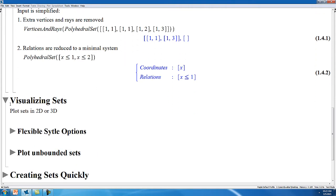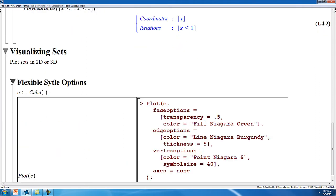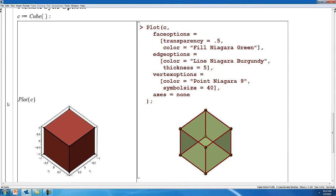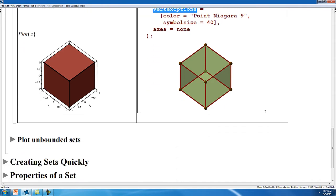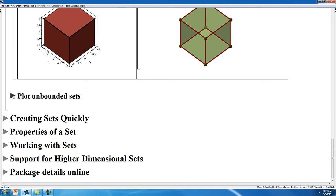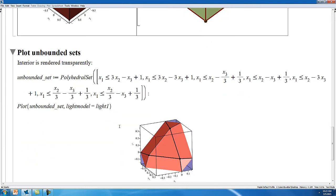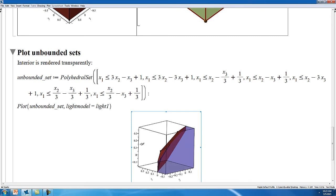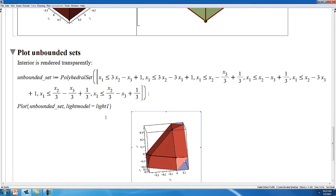You can visualize your sets both in 2D and 3D using the plot command, where we've included many options so that you can style the sets exactly how you would like by customizing how the faces, edges, and vertices will be rendered. In addition, you can plot unbounded sets. Here you can see that the interior of the set is rendered transparently, so that way you can tell exactly what is and isn't a part of your set.